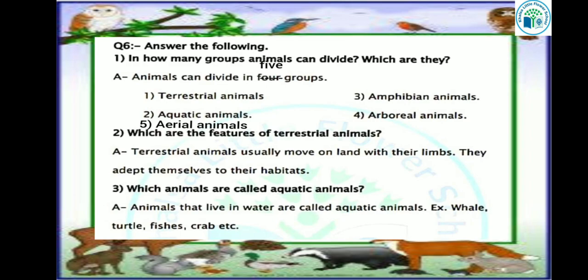Which animals are called aquatic animals? Animals that live in water are called aquatic animals. For example, whale, turtle, fishes, crab, etc. The animals that live in water are called aquatic animals, such as whale, turtle, fish, and crab.